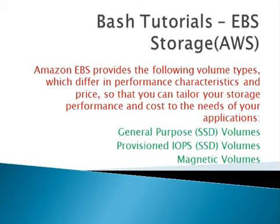General Purpose SSD starts at around 100 IOPS and can burst up to 3000 IOPS. IOPS are the main thing when working on a system. If you require good performance, go for General Purpose. If you require excellent performance, go with Provisioned IOPS, because Provisioned IOPS volumes range from 1000 IOPS and can burst up to 20,000 IOPS and beyond.